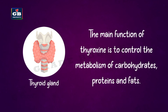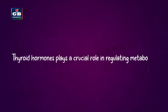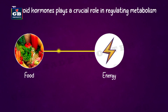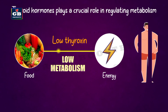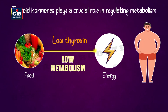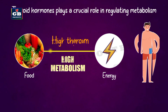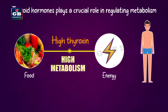The main function of thyroxin is to control the metabolism of carbohydrates, proteins, and fats. Metabolism is the process by which our body converts food into energy and vice versa. An underactive thyroid can slow down metabolism, leading to weight gain and fatigue, while an overactive thyroid can speed up metabolism, causing weight loss and other symptoms.